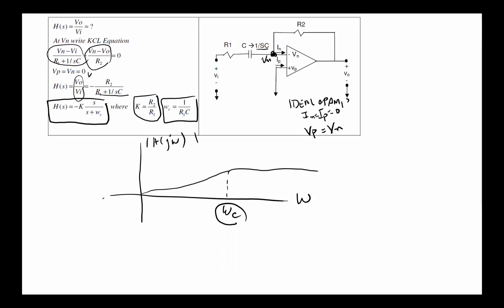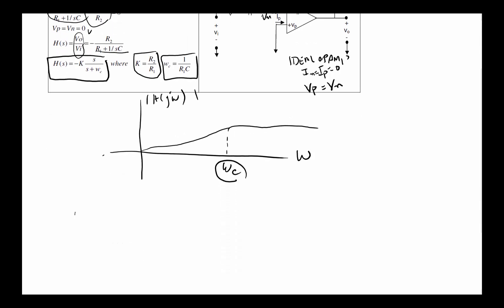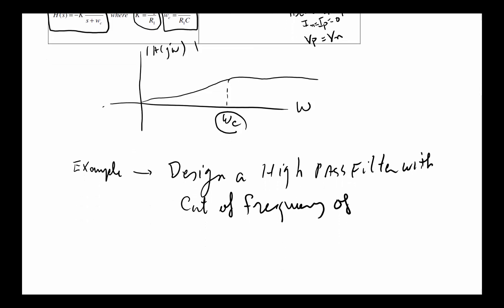A typical example might be: someone comes up to us and says design a high-pass filter with cutoff frequency of 500 radians per second.